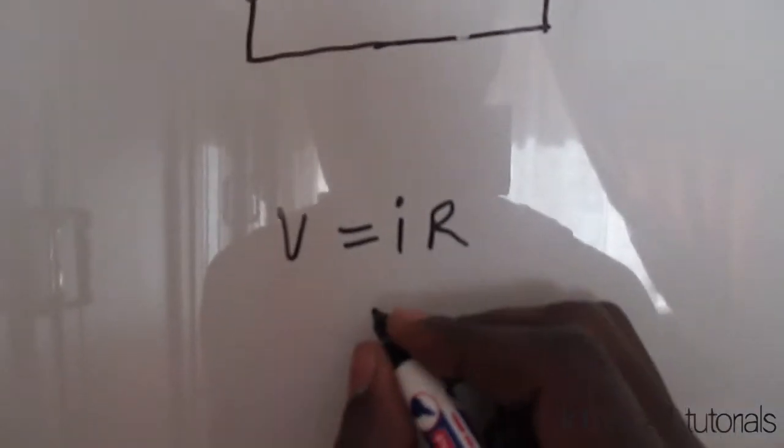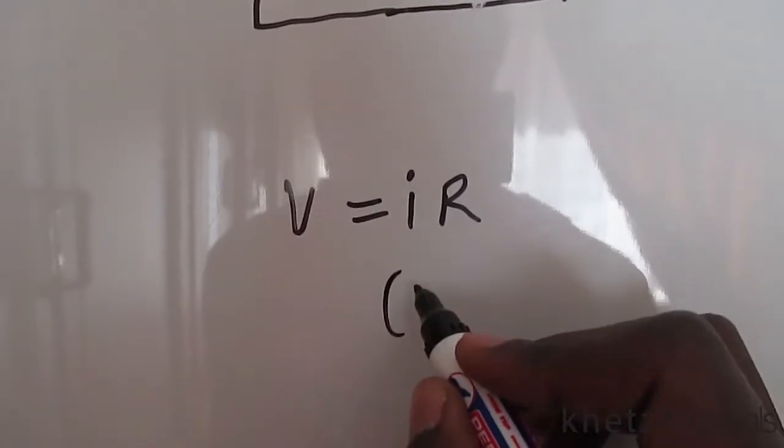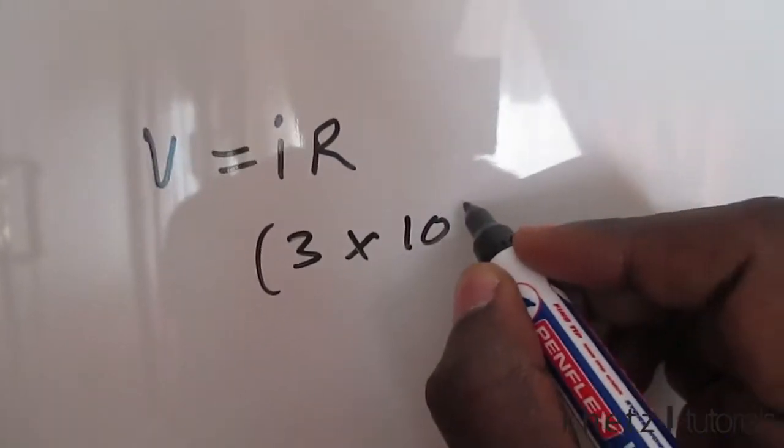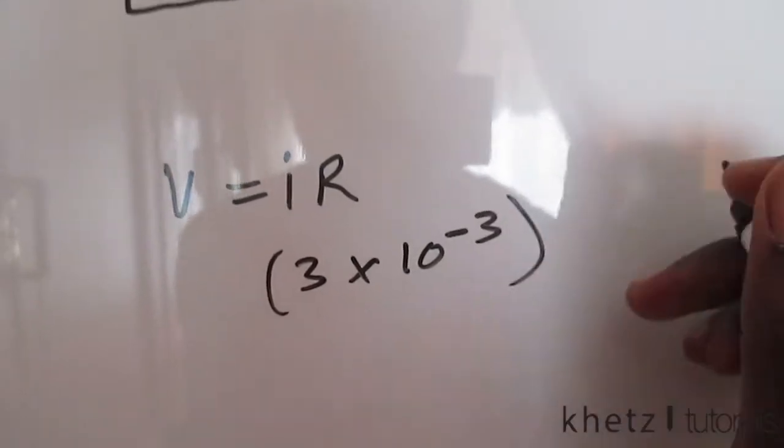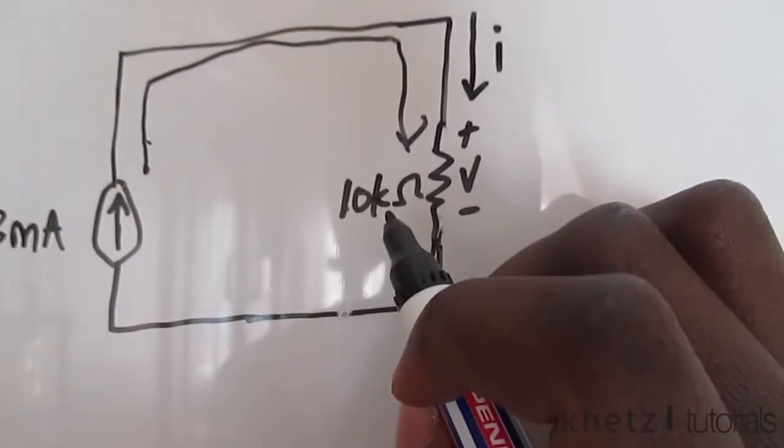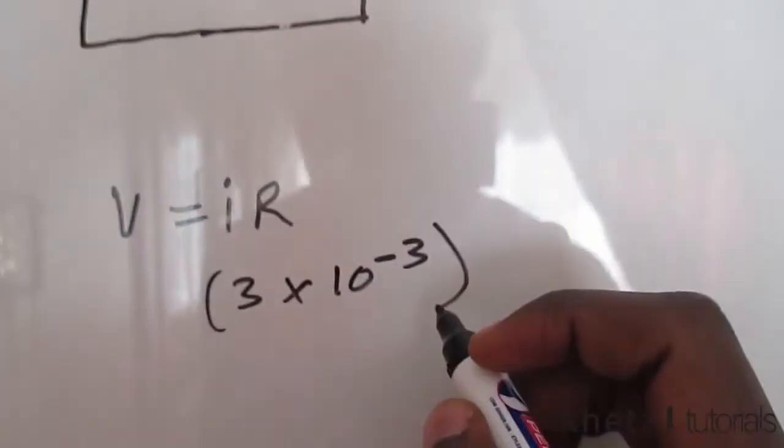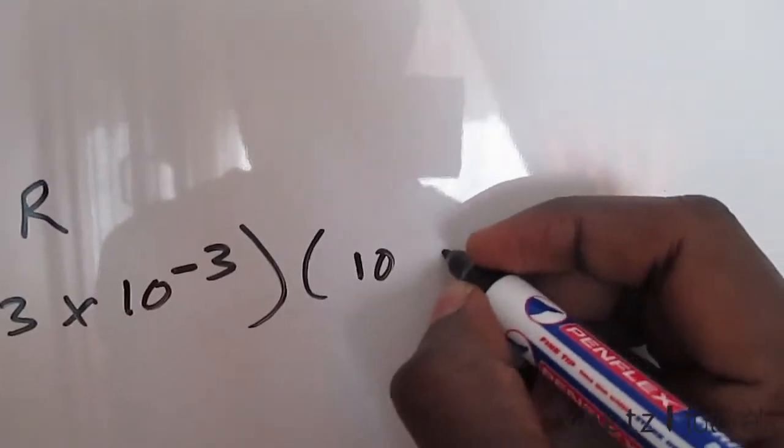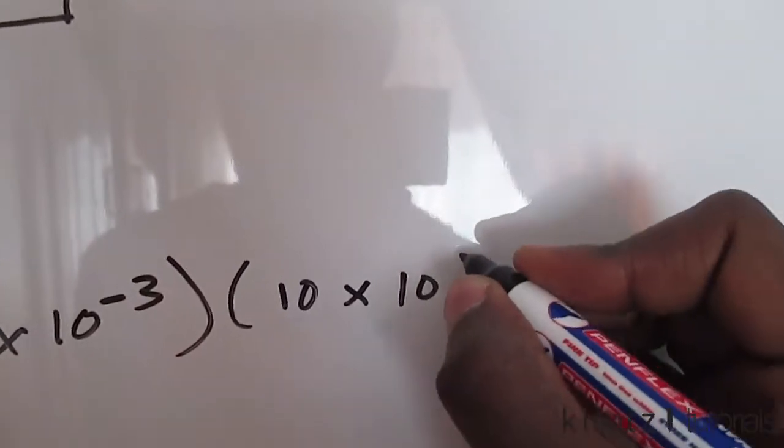i has a value of 3 milliamperes, which is 3 times 10 to the minus 3. And we take this value of 10 kiloohms, which is R, the resistance. So 10 kiloohms, which is 10 times 10 to the 3.